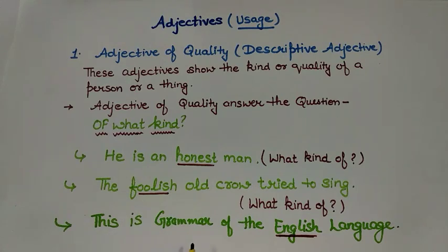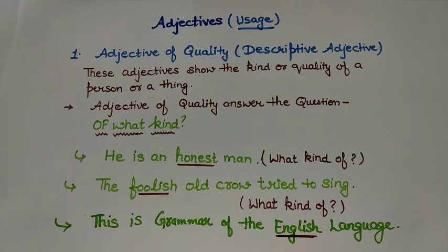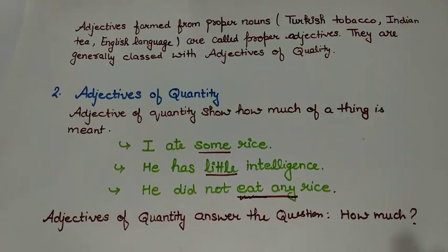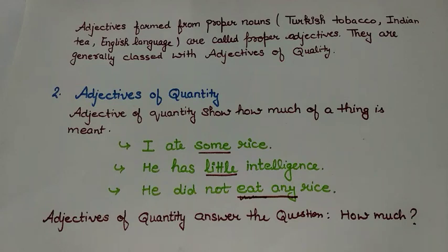This is grammar of the English language. Here, 'English' is a proper noun and an adjective is made of it. So the word 'English' is representing adjective of quality here. Adjectives formed from proper nouns are called proper adjectives, and they are generally classed with adjectives of quality — like Turkish tobacco, Indian tea, English language, etc.